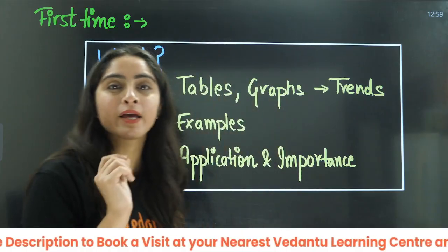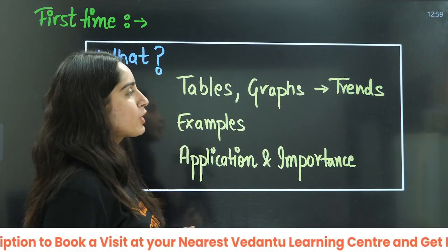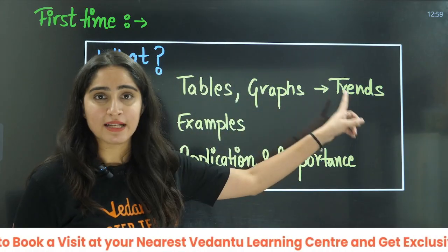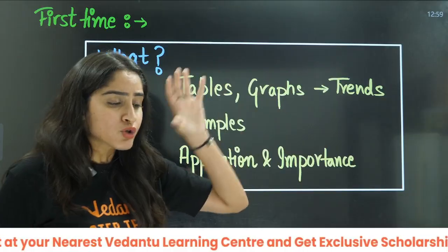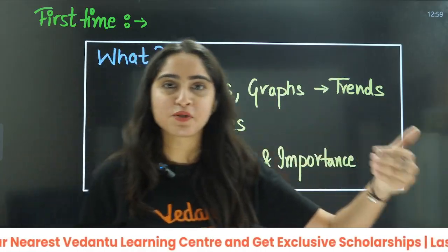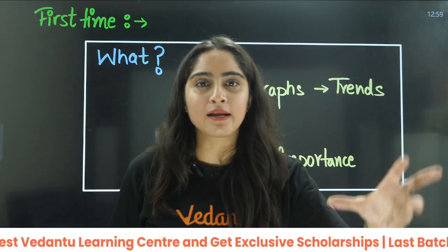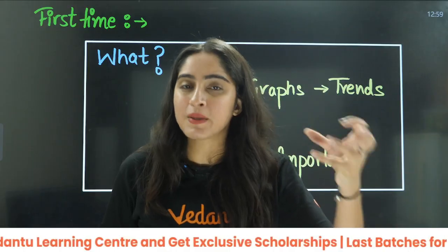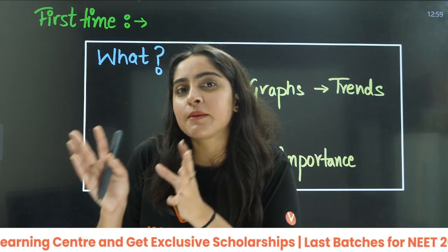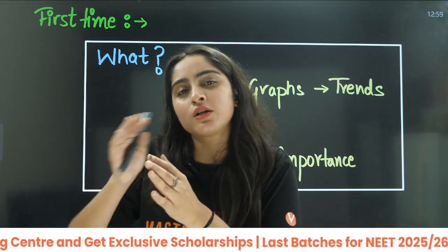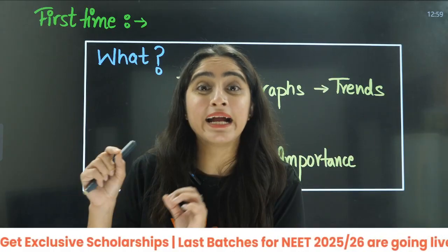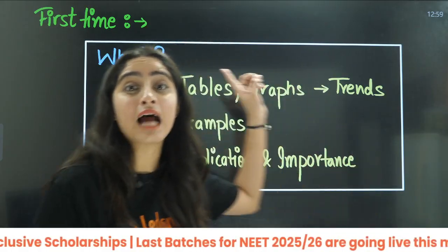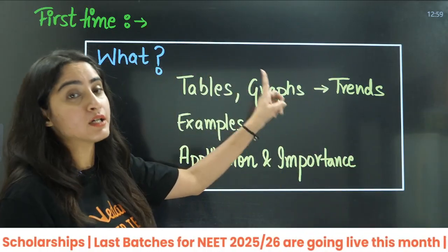In Block Chemistry, the main important point is Trends and Exceptional Trends. Some of the exceptional trends will be there in the paragraphs, but some exceptional trends or normal trends will also be hidden in the graphs and the tables.